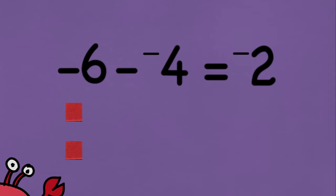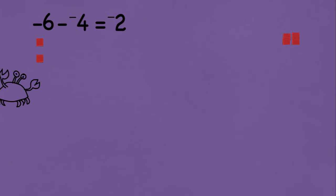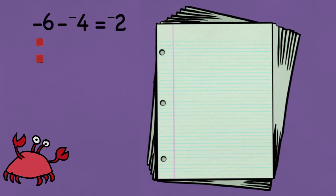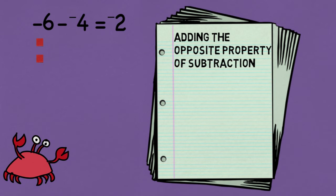But pulling out tiles every time I need to solve a problem is not practical, so let's look at another way of thinking about subtraction. In algebra, we use the rule adding the opposite property of subtraction, and it says that subtracting a number is the same thing as adding the opposite of that number.